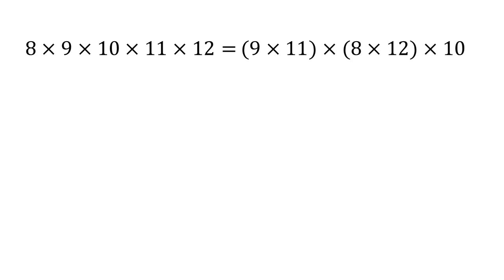We're going to do 9 × 11, 8 × 12, and then multiply by 10 at the end. We've left the 10 at the end because that's the easiest one to multiply by. The other two pairings give us 99 and 96.